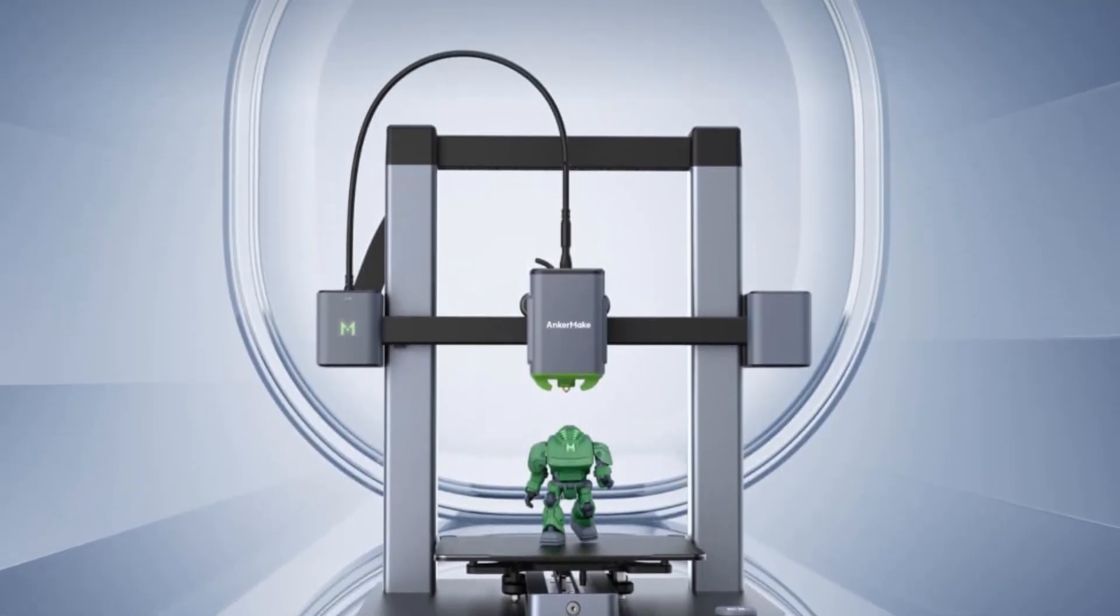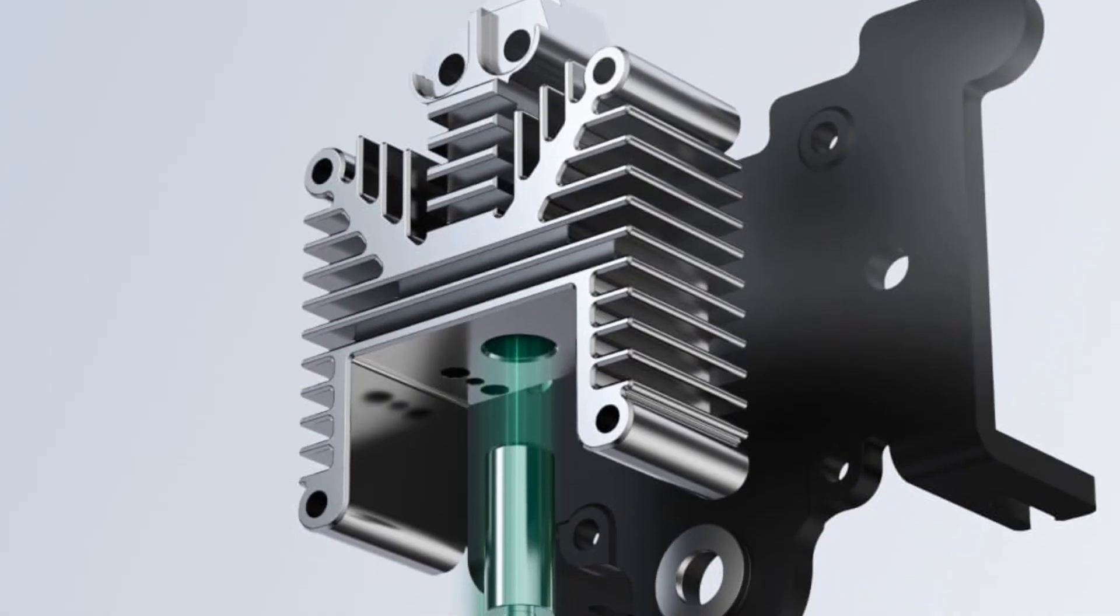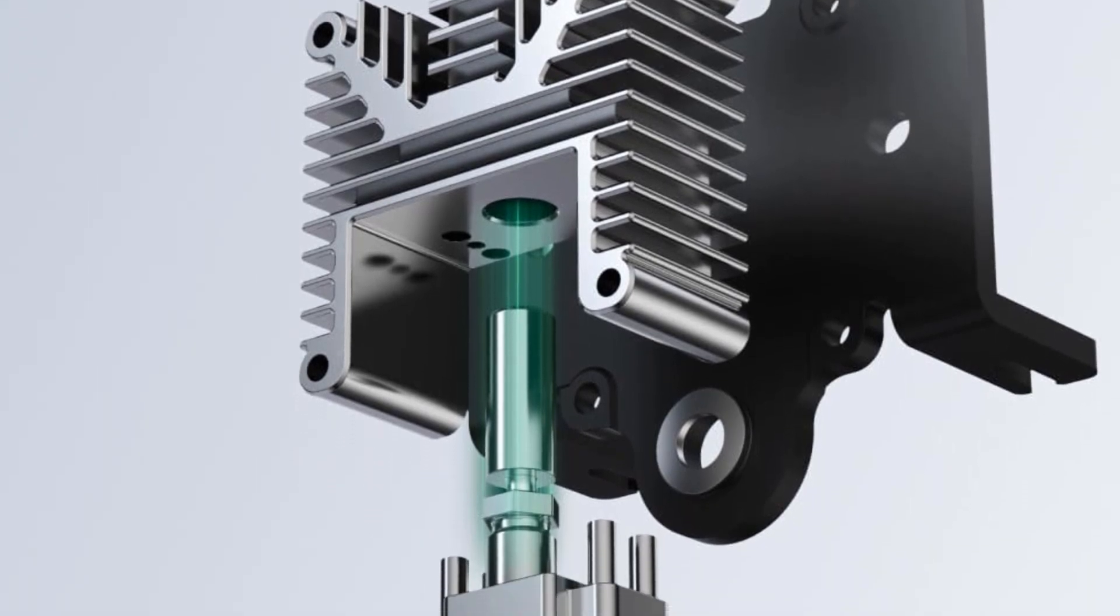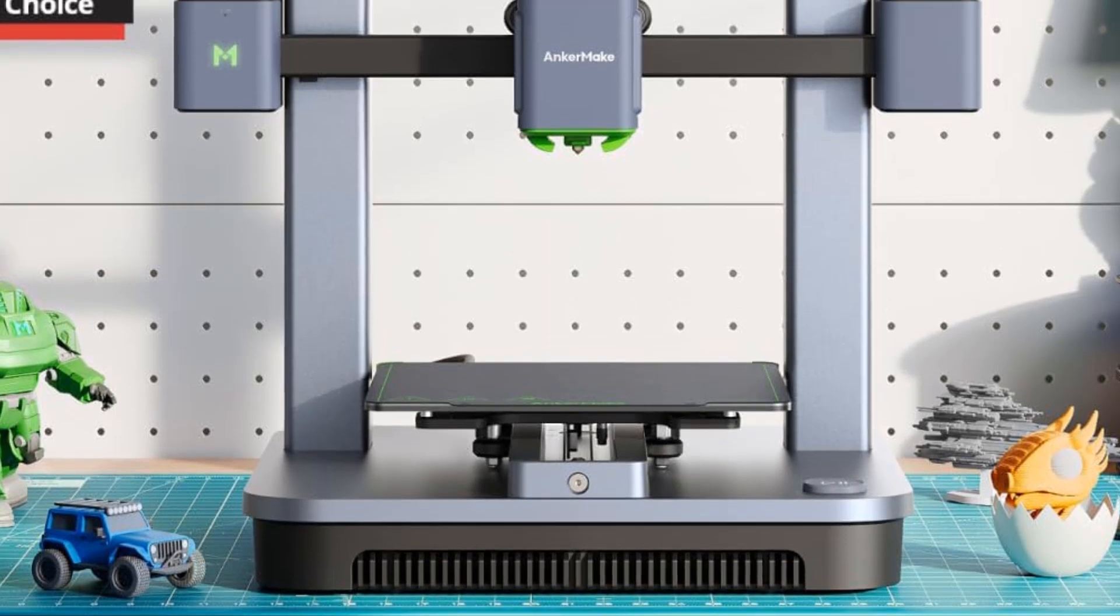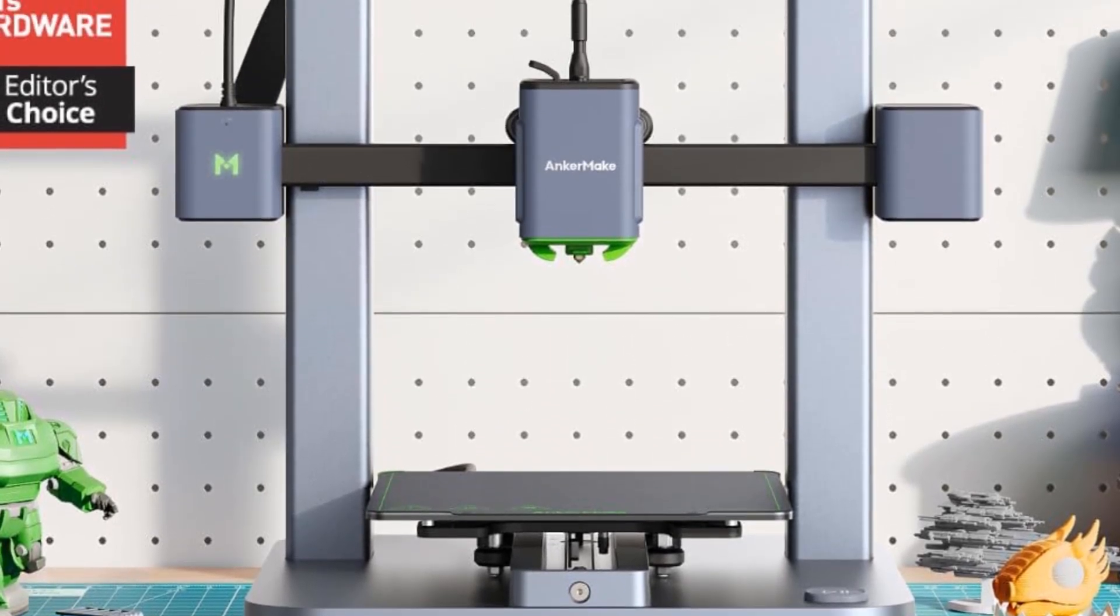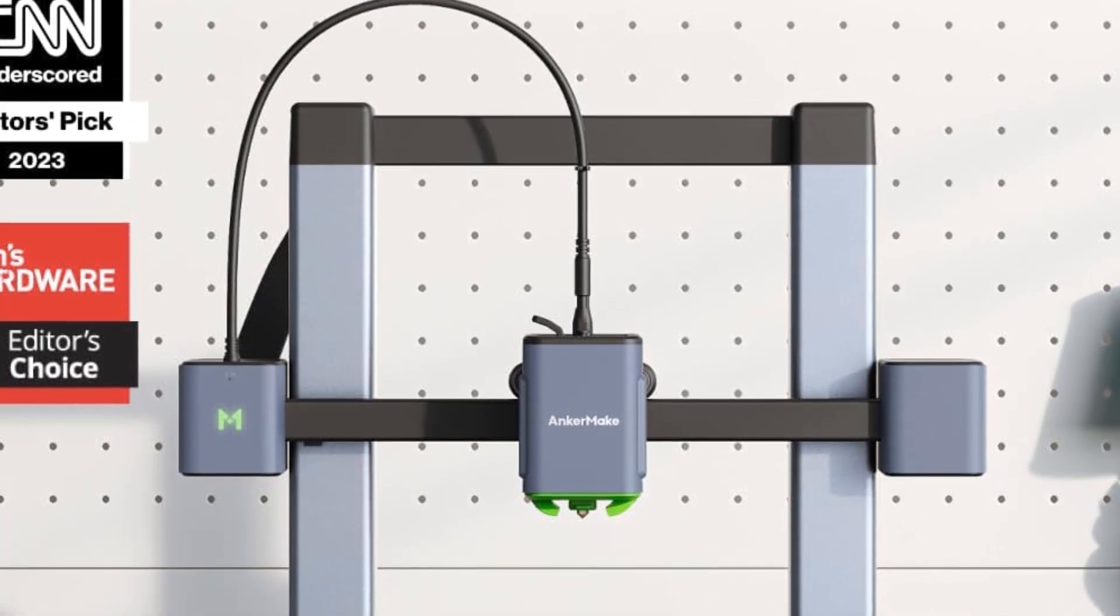Having the ability to control the printer from a mobile device is a nice touch. We also like the availability of the fast 500mm per second mode. The M5C supports printing with a wide variety of filaments including PLA, PLA+, PETG, ABS, TPU, carbon fiber, and wood composite.